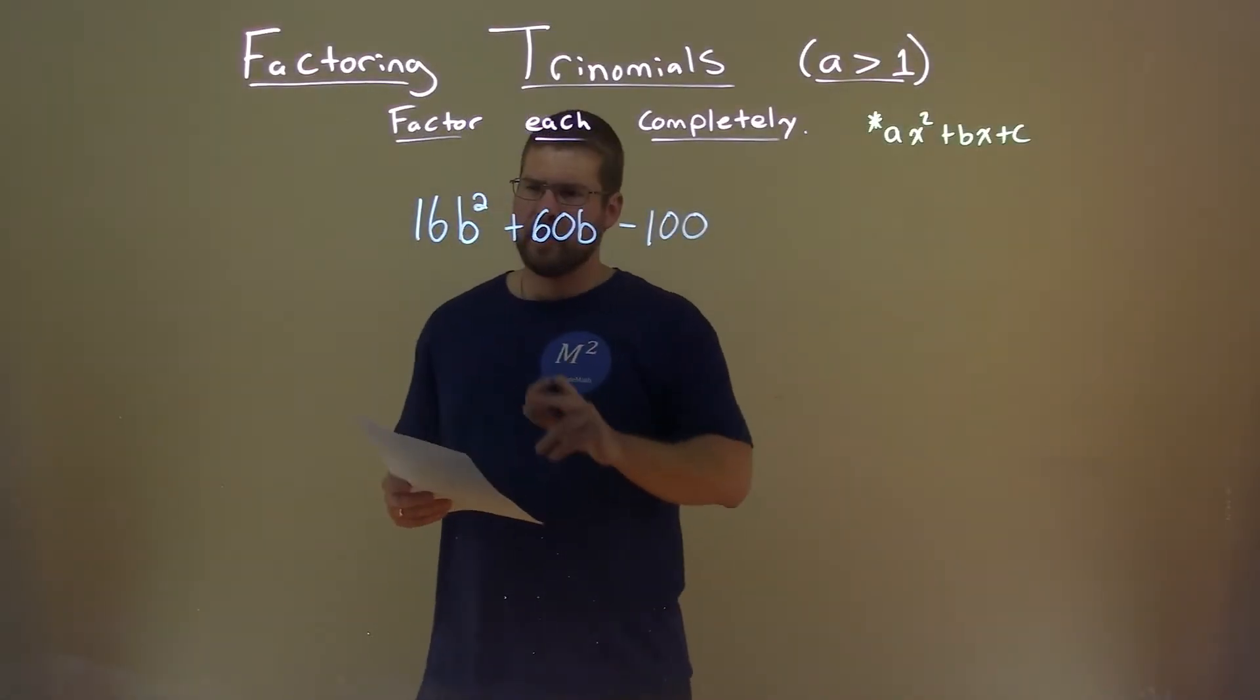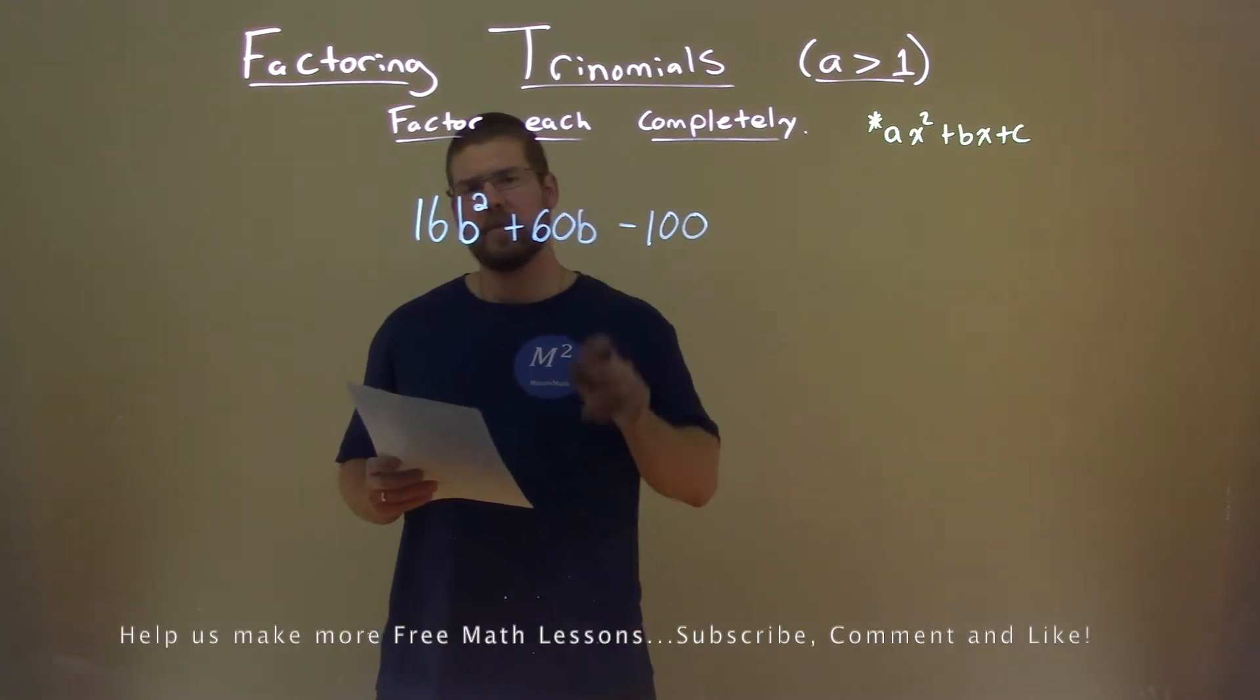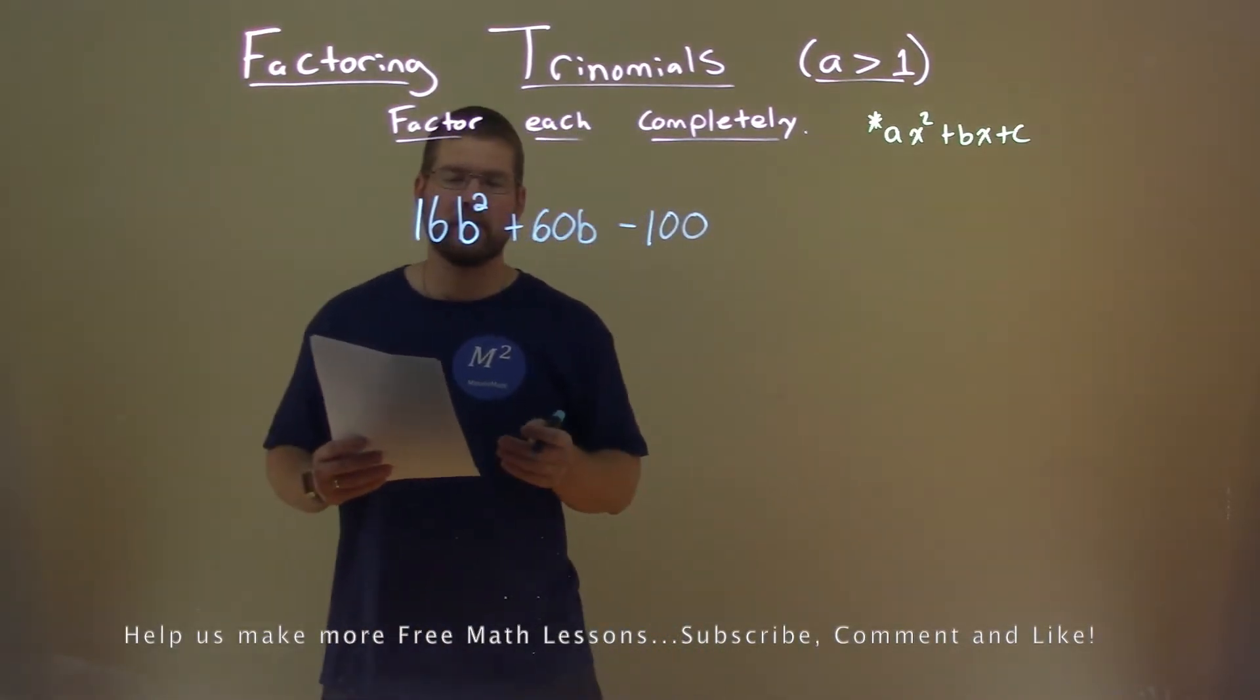We're given this problem right here, 16b squared plus 60b minus 100, and we need to factor this completely.